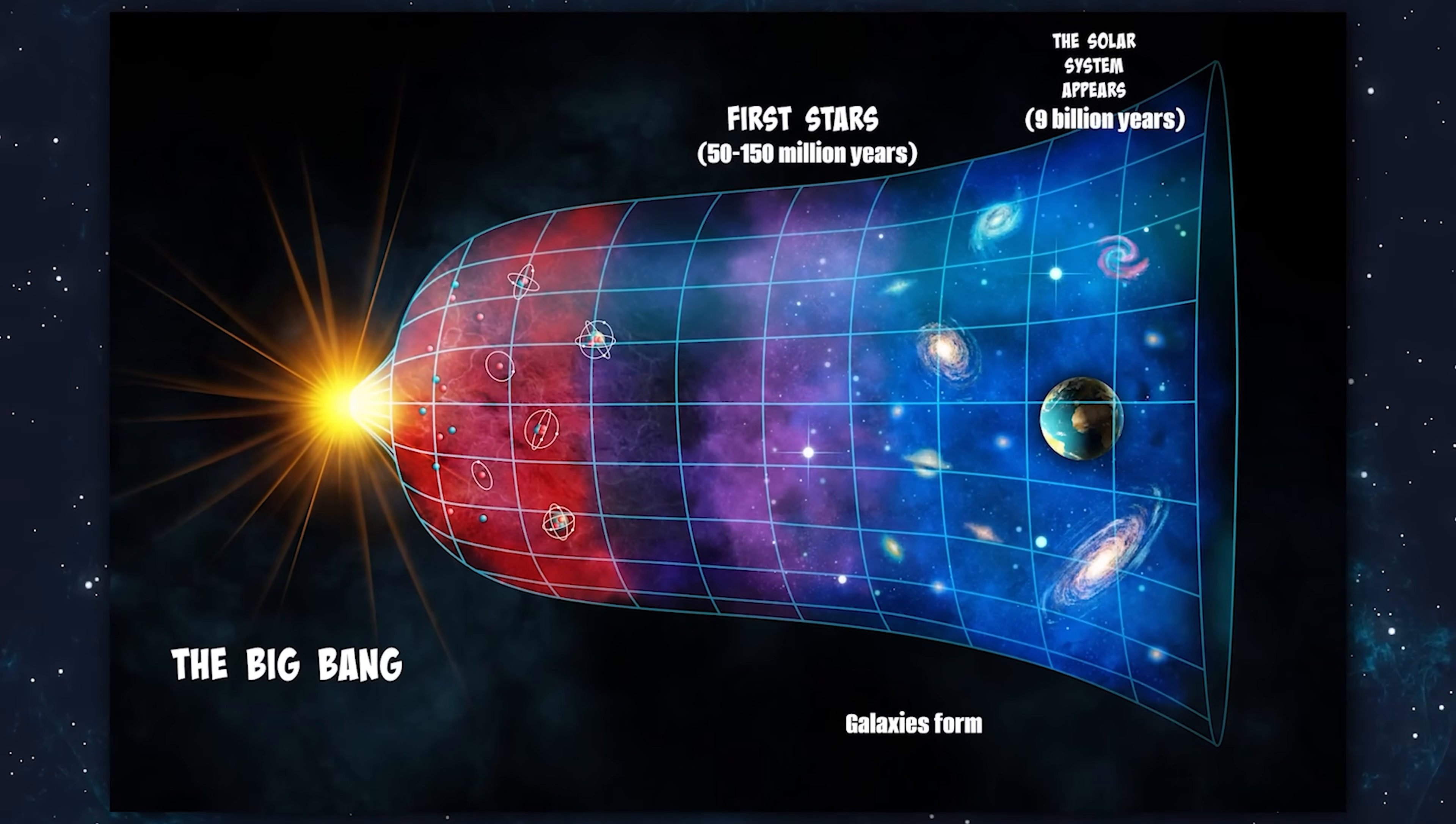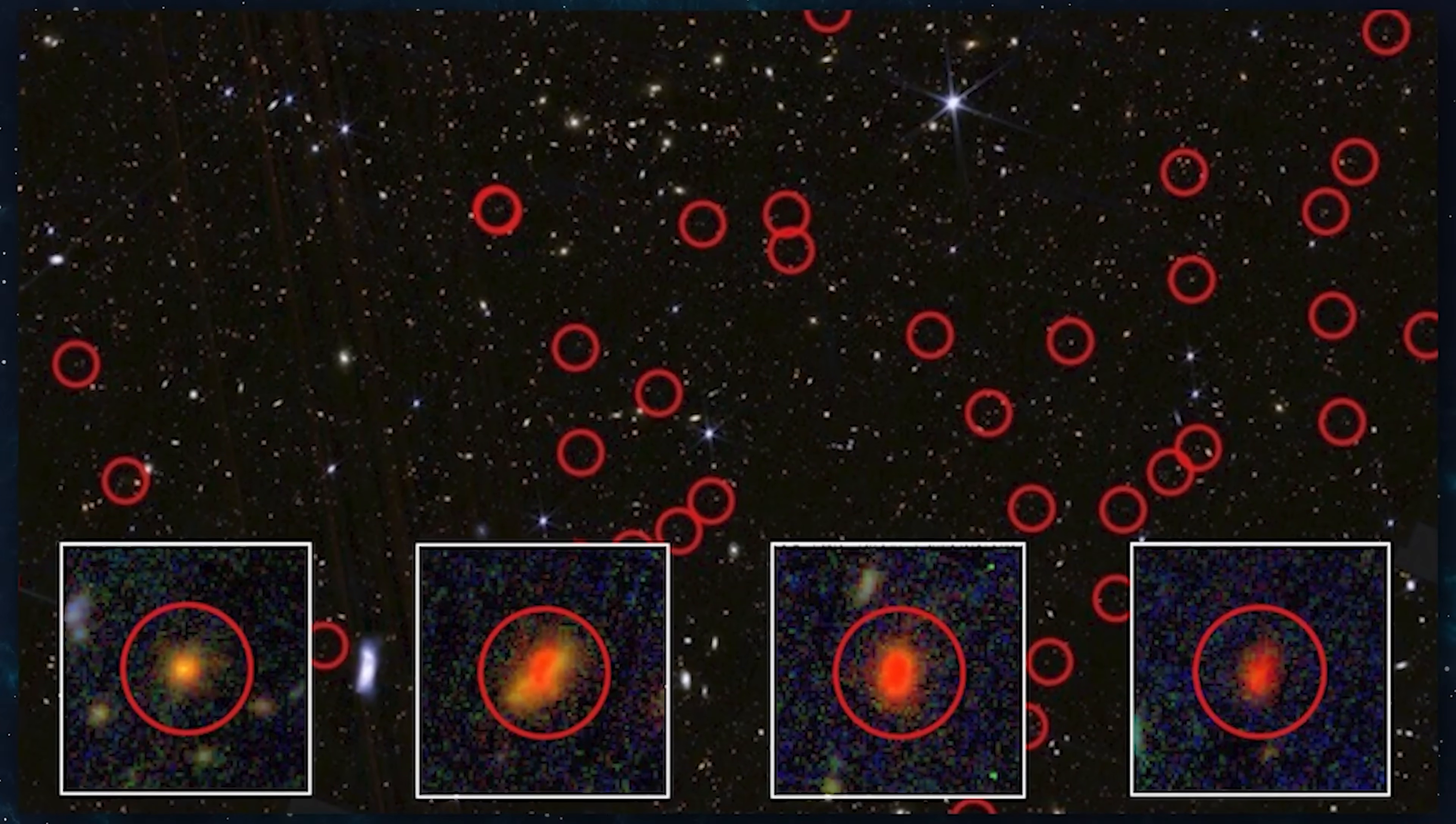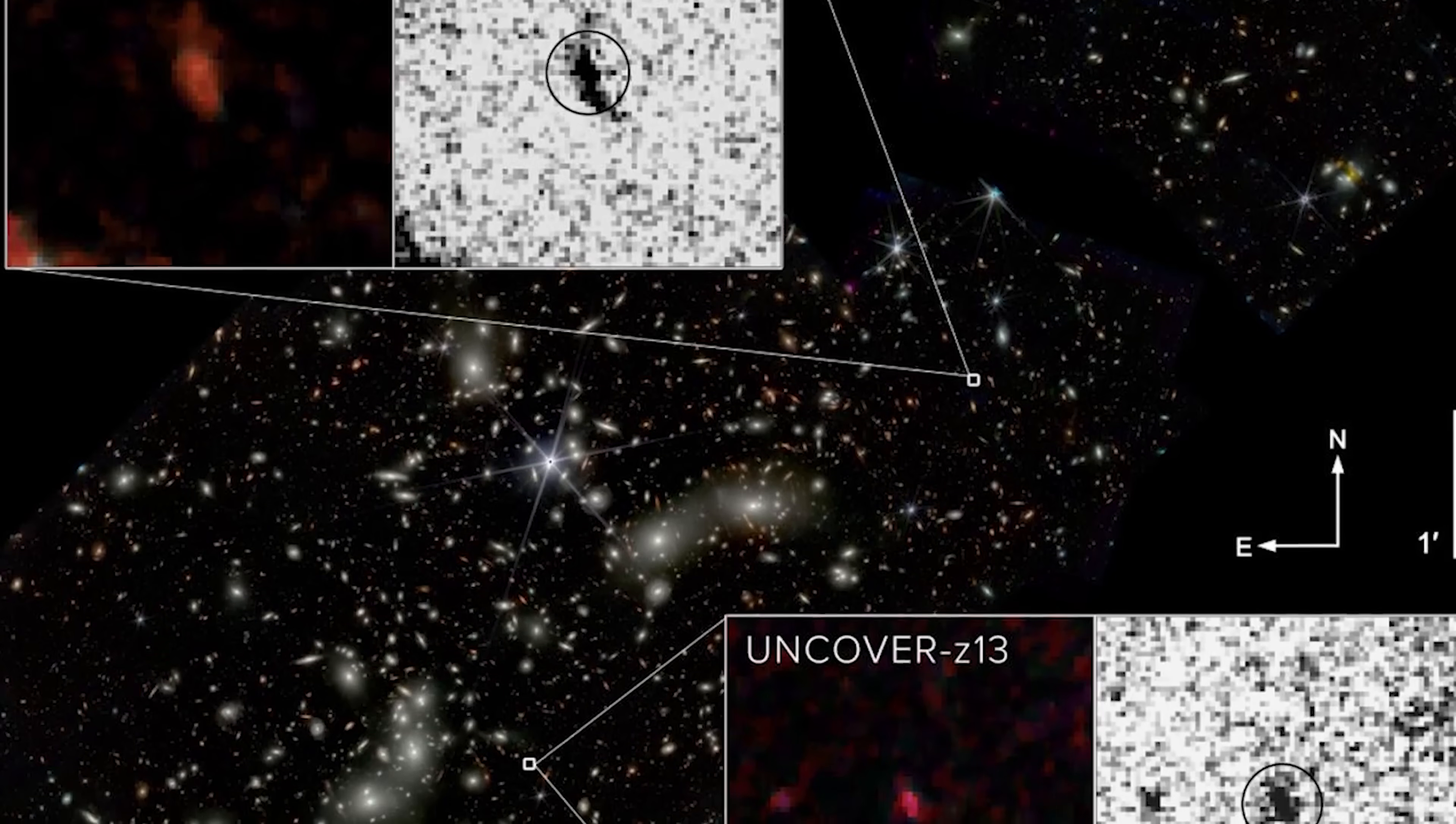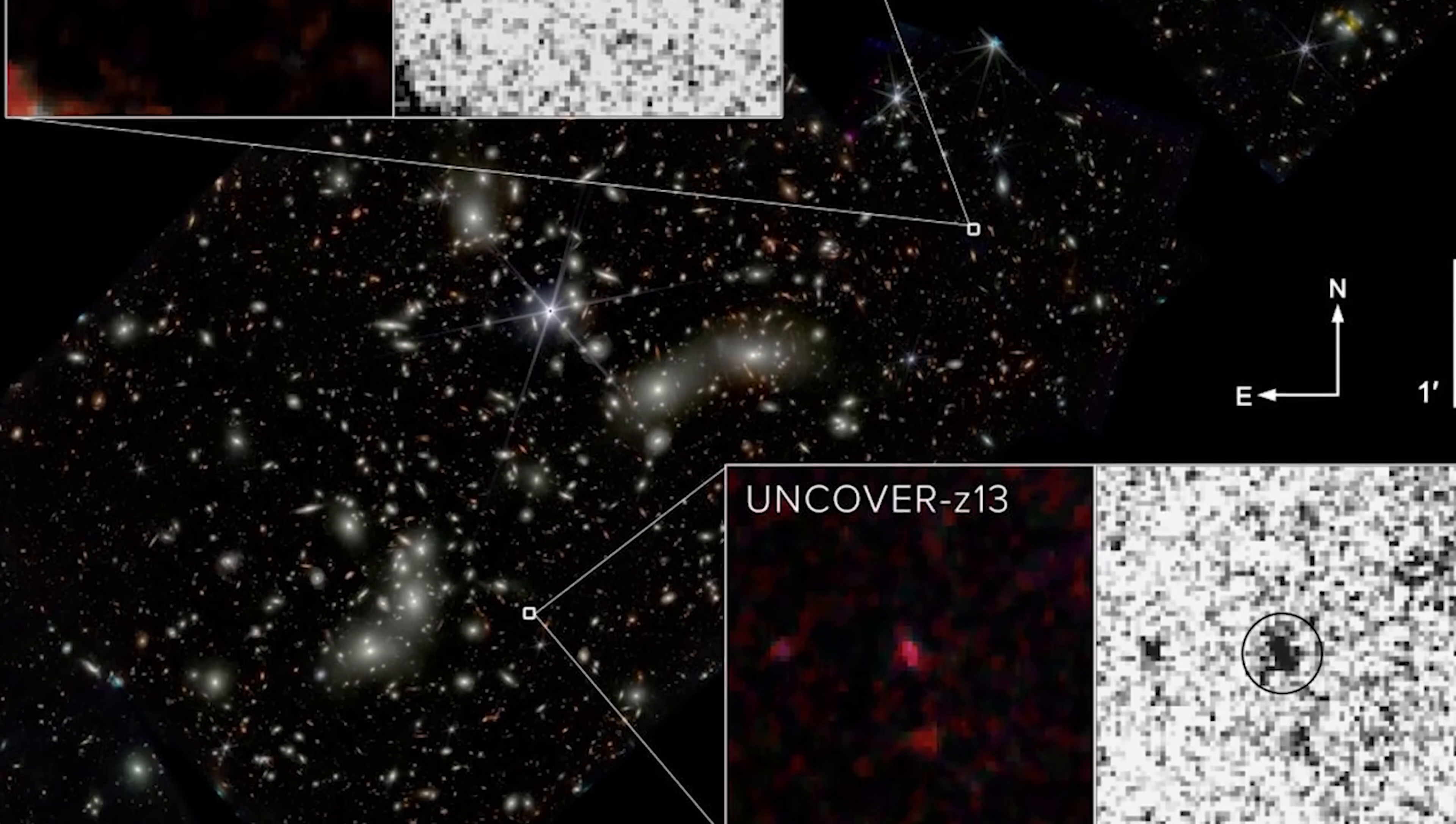While traditionalists continue searching for ways to preserve the Big Bang model, more adventurous researchers are already uncovering findings that point toward new frameworks. A team led by Joel Ledger at Penn State University recently examined the light signals from the oldest galaxies visible in Webb's images.